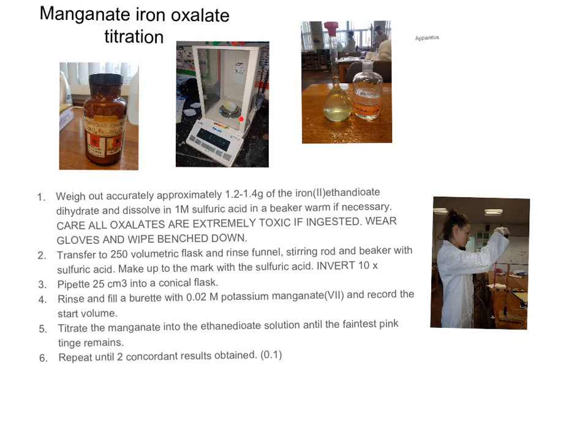We took a little weighing boat, zeroed the top pan balance, took the weighing boat off the balance, put a couple of spatulas in, reweighed it till we had roughly 1.2 to 1.4, recorded that mass, transferred the contents of the weighing boat into a beaker, and weighed the dirty weighing boat again. So we knew exactly by weighing by difference how much of the ethanedioate had been transferred to our beaker.